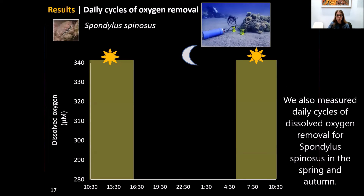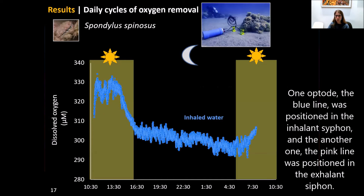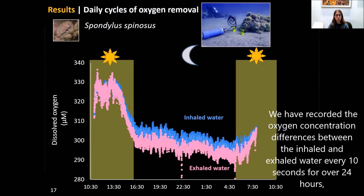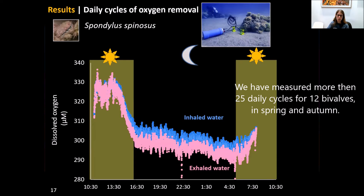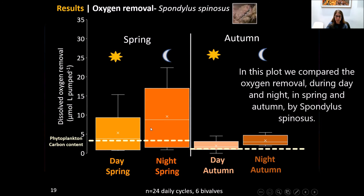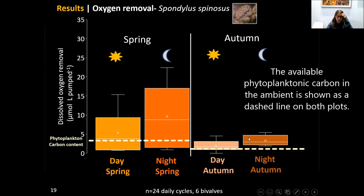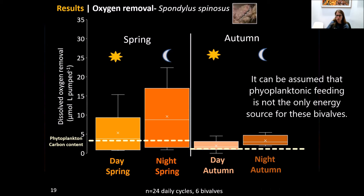We also measured the daily cycle of dissolved oxygen removal for Spondylus spinosus in spring and autumn. One optode, shown as the blue line, was positioned in the inhalant siphon, and another, the pink line, in the exhalant siphon. We recorded oxygen concentration differences every 10 seconds for over 24 hours for more than 25 daily cycles across 12 bivalves in spring and autumn. The median oxygen removal in spring is much higher than in autumn. The available phytoplanktonic carbon in the ambient water, shown as a dashed line, cannot account for the high oxygen removal recorded, suggesting phytoplanktonic feeding is not the only energy source.